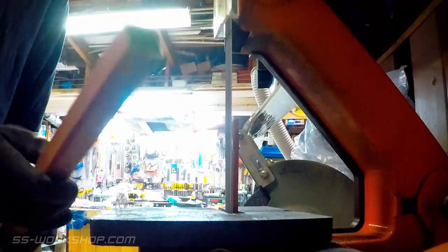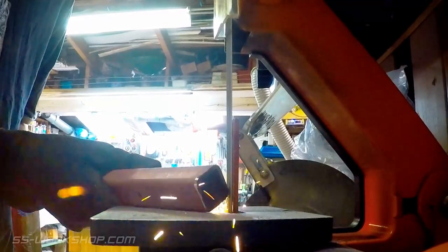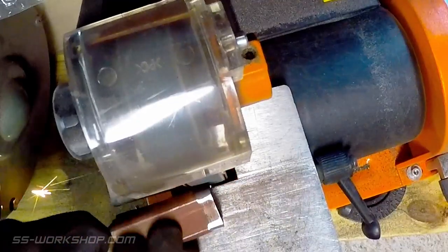Once all the cutting's complete, head over to the belt grinder, clean up all the ends and remove the paint where I'm going to weld.